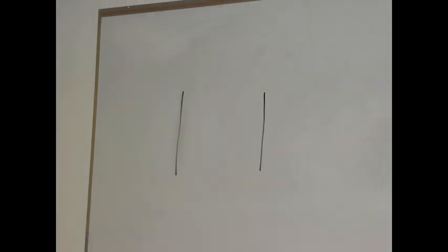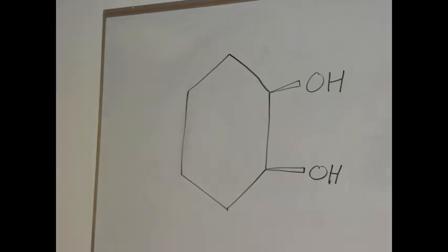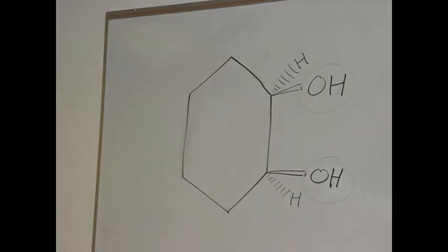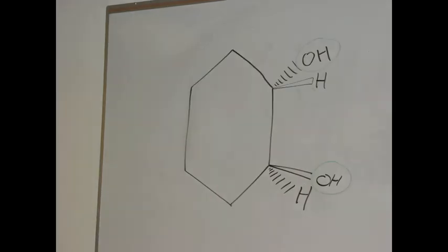Cis and trans also applies to ring structures. Here we have two examples of 1,2-cyclohexane diol. This molecule is cis, because its hydroxyl groups face upwards relative to their geminal hydrogens. This molecule is trans, because its hydroxyl groups face in opposite directions.